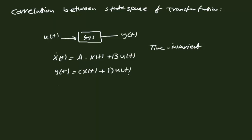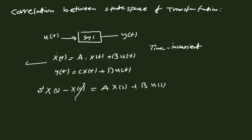If I take the Laplace transform and evaluate the transfer function, we take the Laplace transform of the state equation, giving: s·X(s) minus X(0) equal to A·X(s) plus B·U(s). We set X(0) equal to zero when deriving the transfer function, so: s·X(s) equal to A·X(s) plus B·U(s).